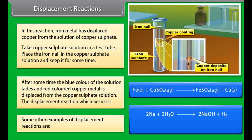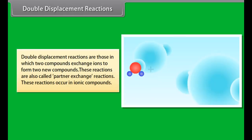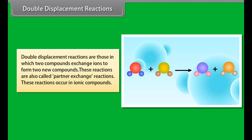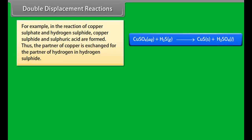Displacement reactions: A displacement reaction is a reaction in which an atom or a group of atoms in a molecule is displaced by another atom. For example, iron added to a solution of copper sulfate displaces copper metal. Activity: Dissolve 0.5 gram of silver nitrate in 10 ml water in a test tube, place a clean copper wire in it, and keep it for some time. Shining crystals of silver appear on the copper wire, and the solution becomes bluish as copper nitrate is formed.